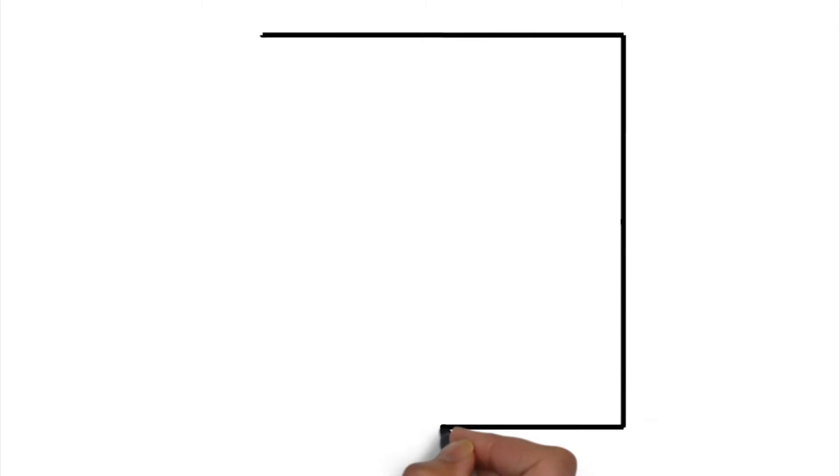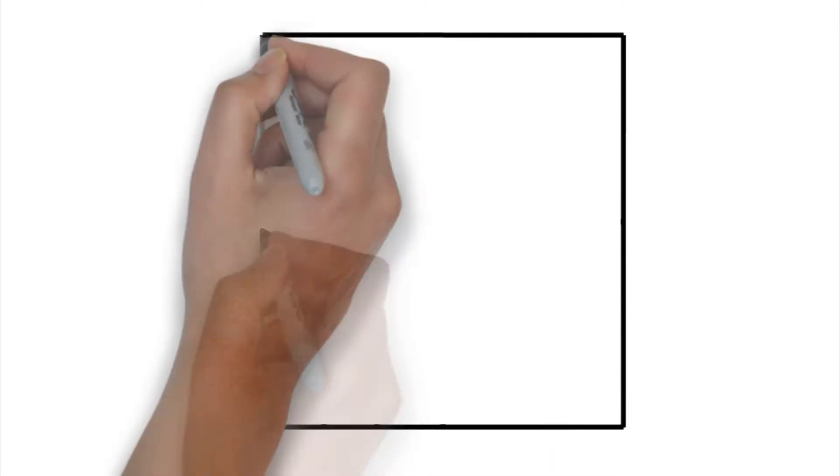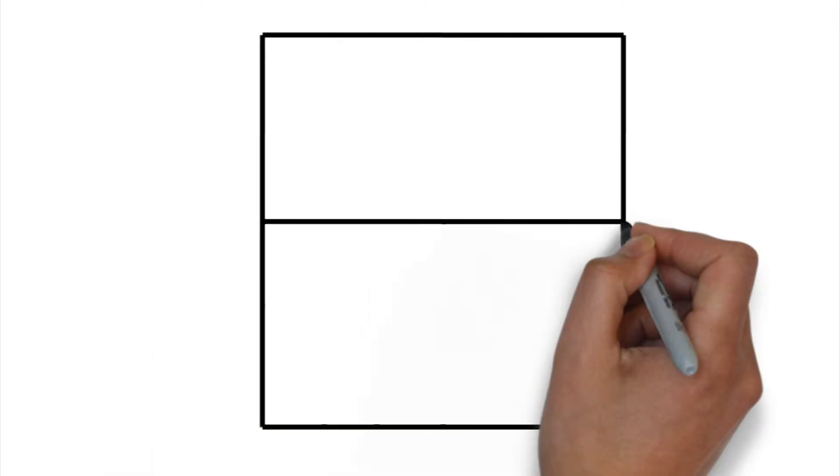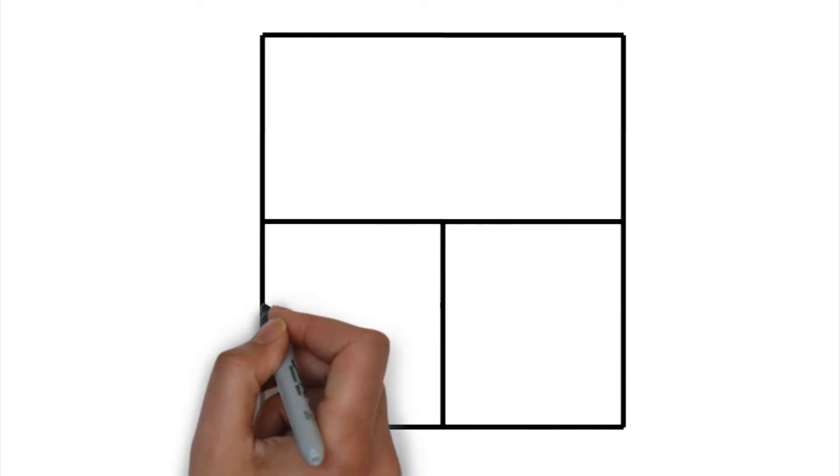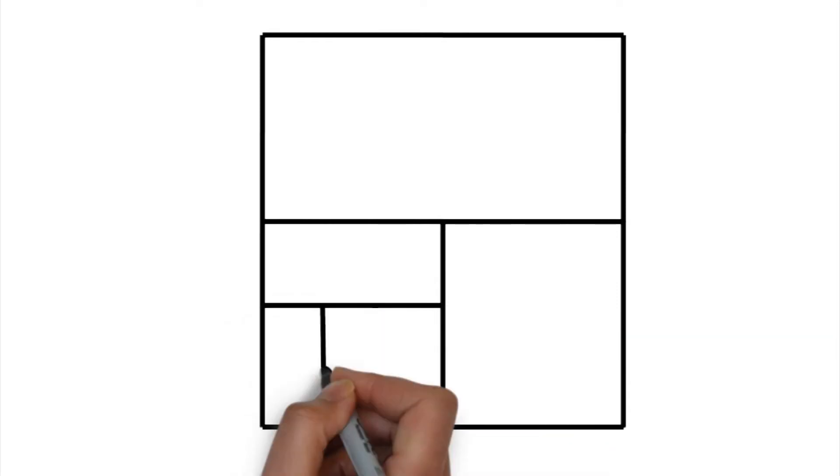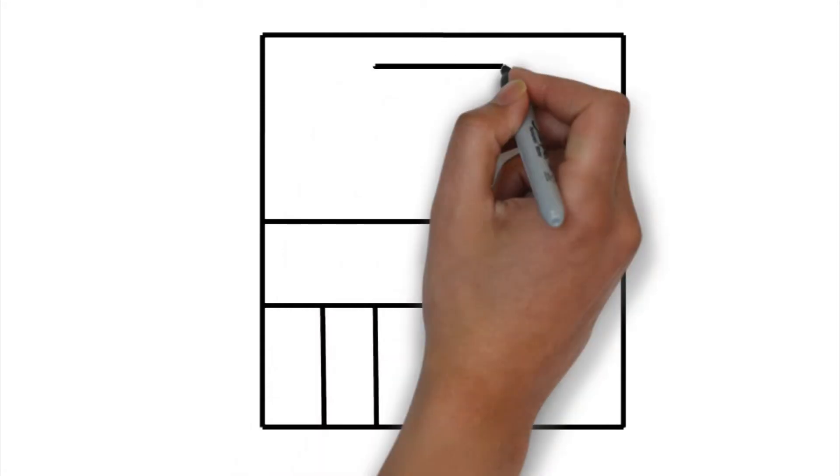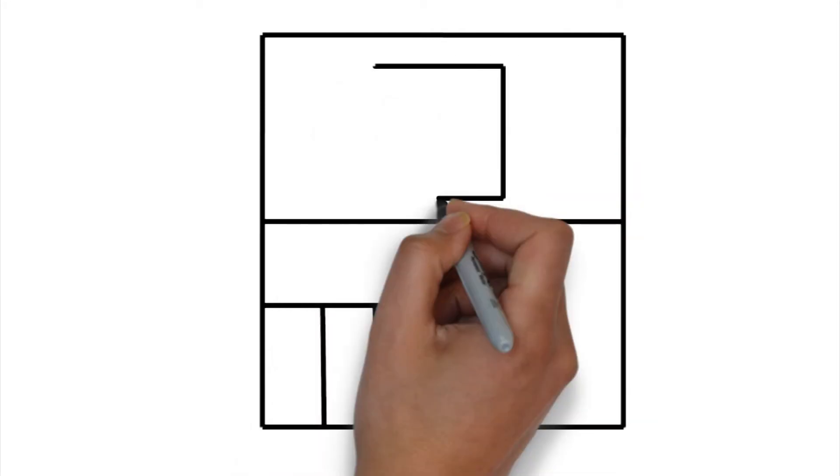First, I'd like you to make a square. Split that square in half. Split the bottom in half. Split the left in half. And then cut the bottom part into two pieces. And then draw another square in the top section.